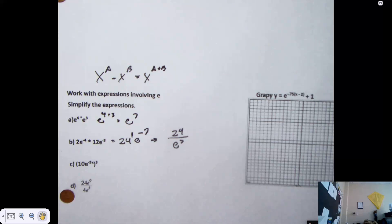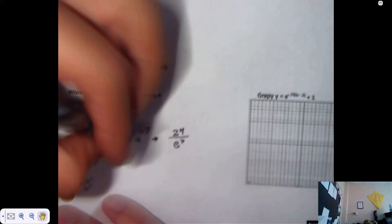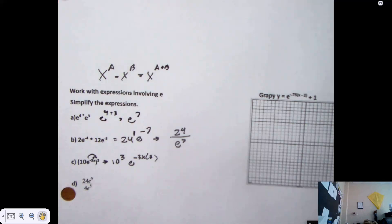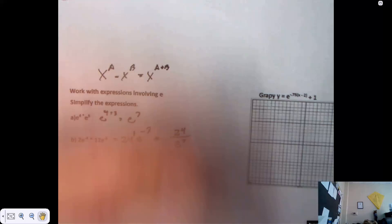24's understood exponent was what? 1. It had an understood exponent. An understood positive exponent. It does not move. Only things with negative exponents move. Alright, C is 10 times E to the negative 3X raised to the 3rd power. Grant, what are you allowed to do with that 3? Move it in. Both pieces? Yes. It's not a plus sign in between. It's not a minus sign in between. It's a multiplier sign in between. Both pieces get that cubic. This is 10 cubed. E to the negative 3X cubed again. What is 10 cubed? 1,000.